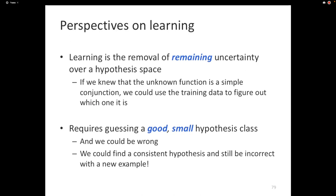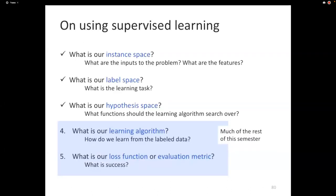You could introduce new variables through feature expansion — introducing new features that are functions of the other variables. That's done quite often. We talked about instance spaces, label spaces, and the hypothesis space. That leaves two questions for supervised learning: what learning algorithm are we going to use, and how are we going to evaluate things? That's going to be the focus for the rest of the semester.